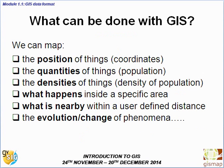What can be done with GIS? We can map almost everything — the position of things, quantities, how dense something is, what happens inside a specific area, multi-temporal analysis, what is nearby — for example, which villages are close to a river or a road — and how phenomena change over time.